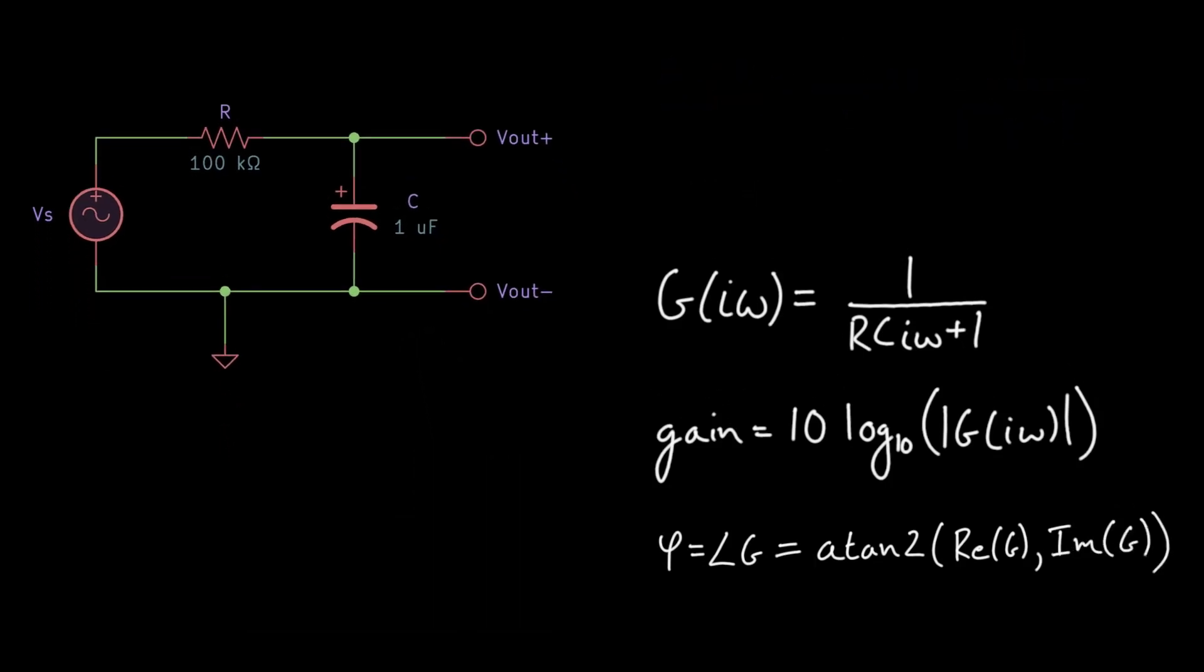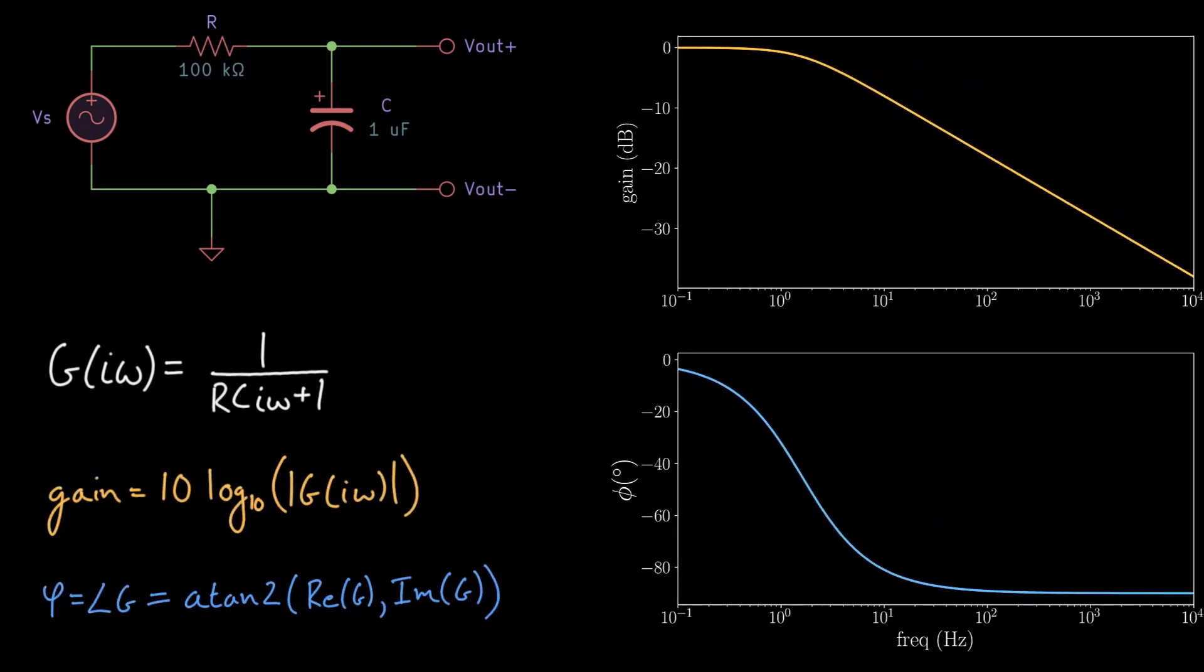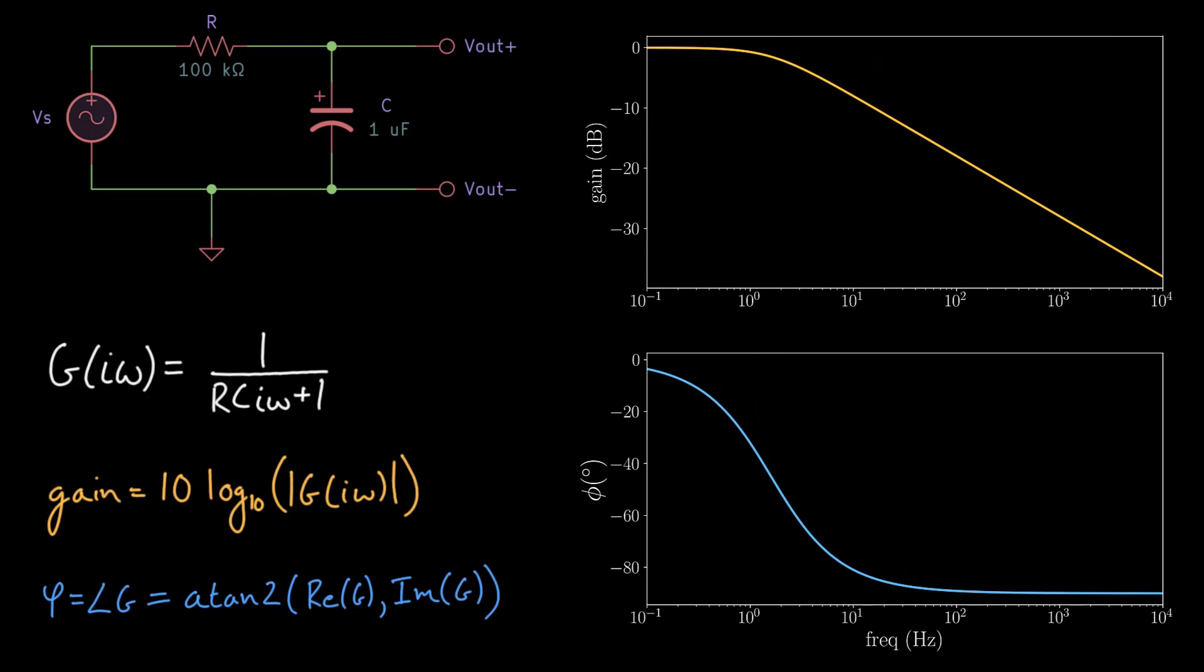To construct the Bode diagram, we simply plug in a range of frequencies and plot the resulting phase and gain. Here's the resulting Bode plot for this RC circuit. You can see that the ODE solution phase and gain are equal to the phase and gain calculated using the transfer function. This RC circuit is a low-pass filter because it attenuates high frequencies but allows low frequencies to pass.